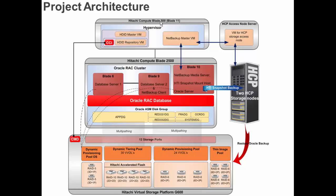On Hitachi Compute Blade 500, inside the hypervisor, three virtual machines are created: the HDID Master virtual machine, the HDID Repository virtual machine, and the NetBackup master virtual machine. The Hitachi Content Platform virtual machine is installed and configured to access two Hitachi Content Platform S10 storage nodes.